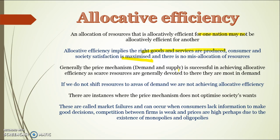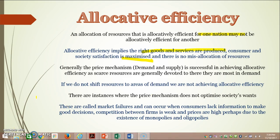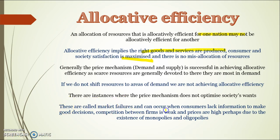For example, if there's an increase in demand for chocolate, resources are more likely to be allocated towards chocolate because that's where you get the higher relative profits, so consumers will generally have their needs met. But there are instances where the price mechanism does not maximise society's wants due to market failures. For example, a lack of competition — oligopolies and monopolies raise prices to maximise profits — can be a negative, and there are other market failures we'll also discuss.